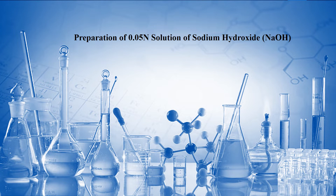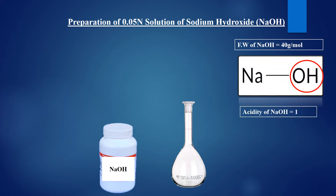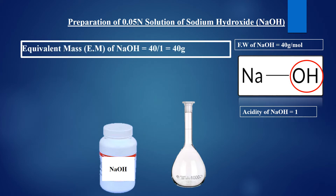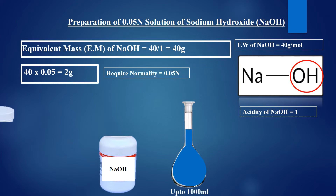Let's discuss the preparation of 0.05 normal solution of sodium hydroxide. The molecular weight of NaOH is 40 grams per mole. Sodium hydroxide has only one replaceable hydroxide ion, so its acidity is 1. Dividing 40 by 1 gives an equivalent mass of 40 grams. Multiplying 40 by 0.05 (since we want a 0.05 normal solution) gives 2 grams. So take 2 grams of sodium hydroxide, dissolve it in water, and dilute the solution up to 1000 milliliters.